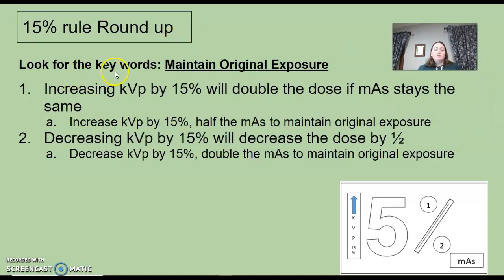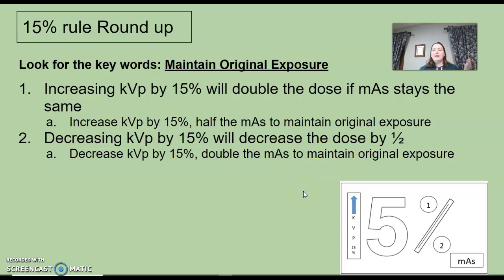15% rule roundup — look for the keyword 'maintain original exposure.' Remember: increasing KVP by 15% will double the dose if you leave your mAs the same, so you have to half the mAs to counteract that change. Decreasing by 15% is the opposite — you double the mAs. It has to be at least 15%, and it might not be exact. Going from 80 to 92, or say 94, is at least 15%, so don't get stuck on exact numbers. Hope that was helpful.